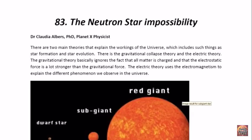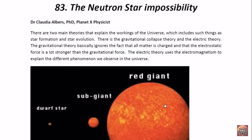There are two main theories that explain the workings of the universe, including star formation and star evolution. There is the gravitational collapse theory and the electric theory. The gravitational theory basically ignores the fact that all matter is charged and that the electrostatic force is a lot stronger than the gravitational force, whilst the electric theory uses electromagnetism to explain the different phenomena we observe in the universe.